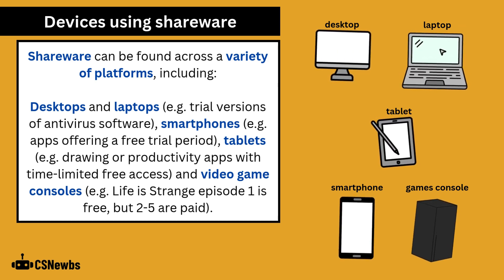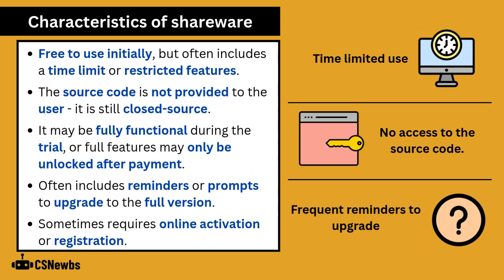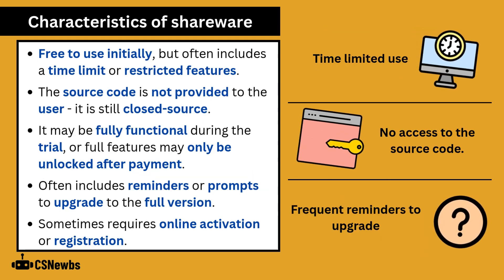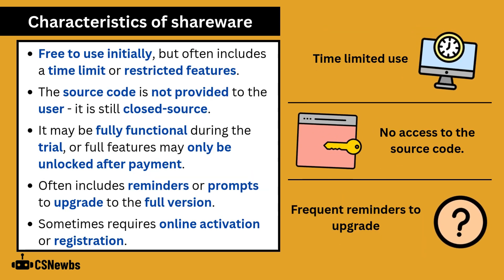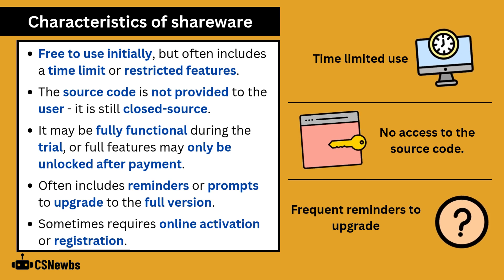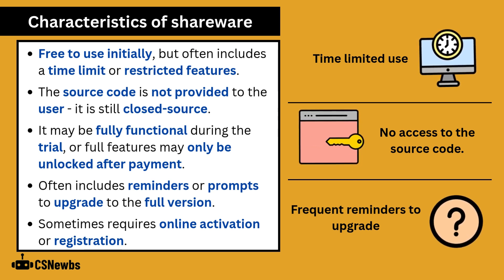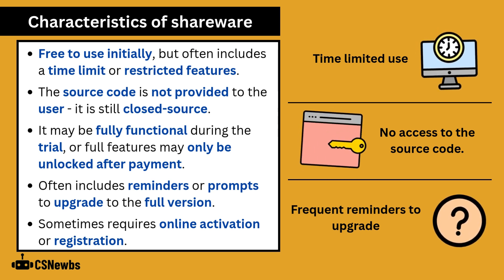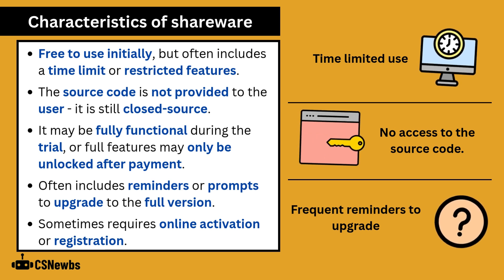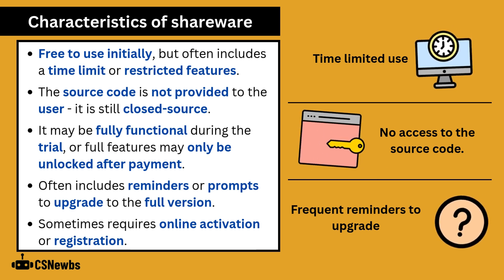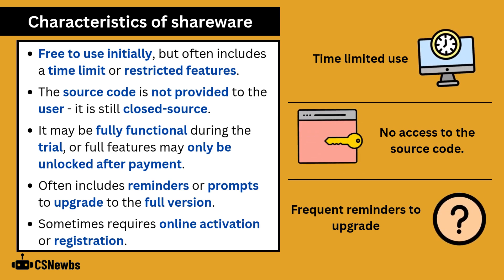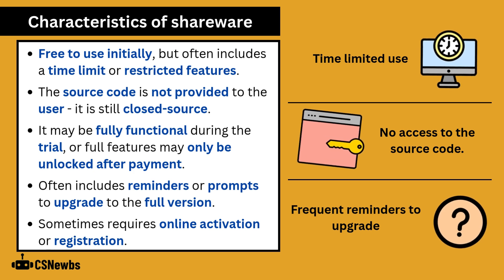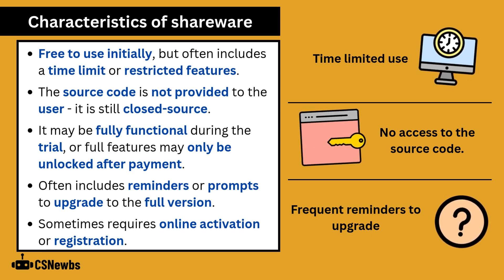This slide contains some examples for each of those platforms. Characteristics of shareware include that it is free to use initially but often includes a time limit or restricted features. The source code is not provided to the user, as this is an example of closed source programming. It may be fully functional during the trial, or full features may only be unlocked after payment. It often includes reminders or prompts to upgrade to the full version and sometimes requires online activation or registration.